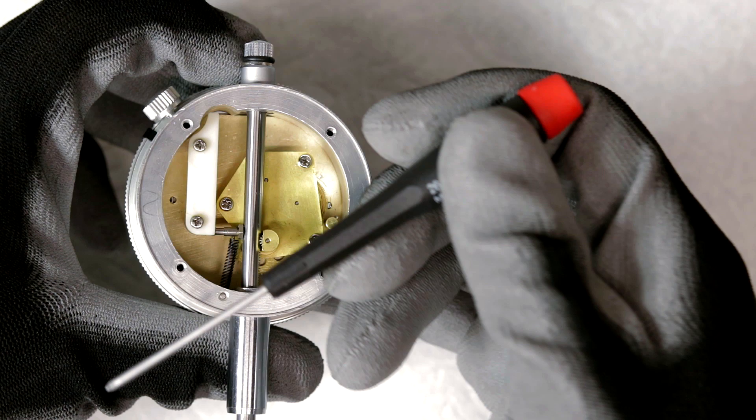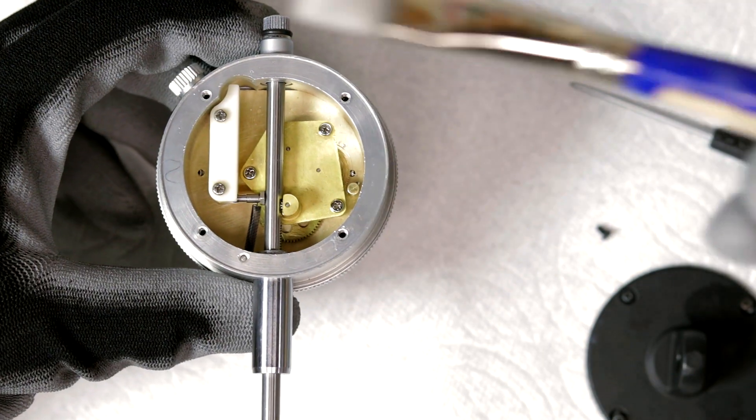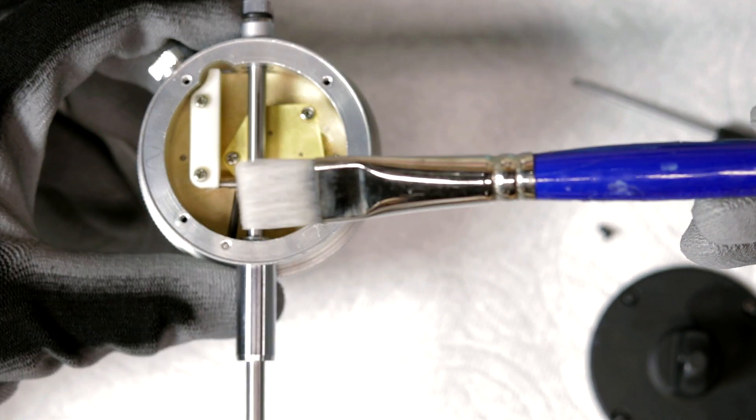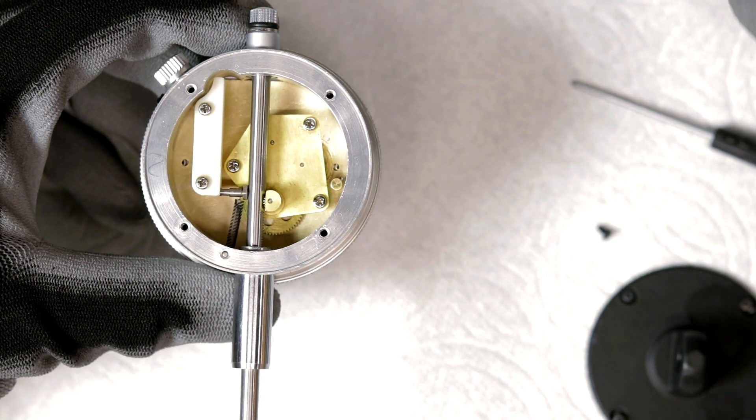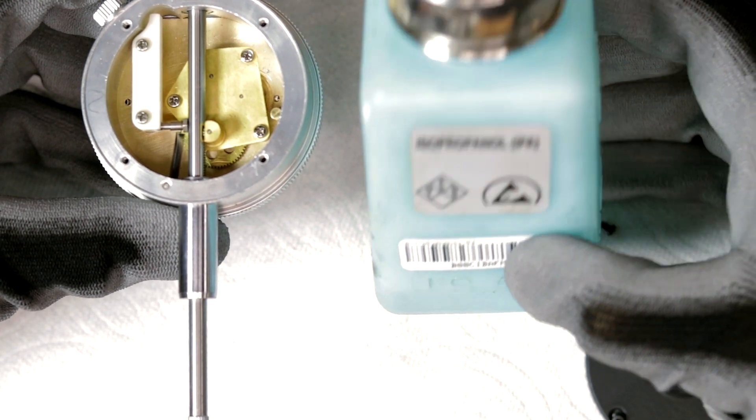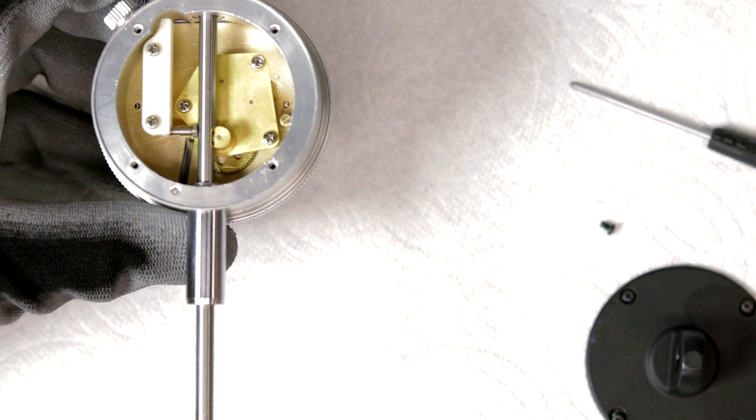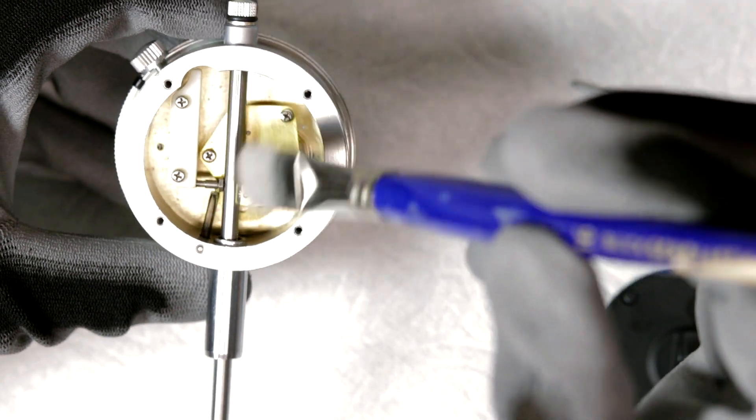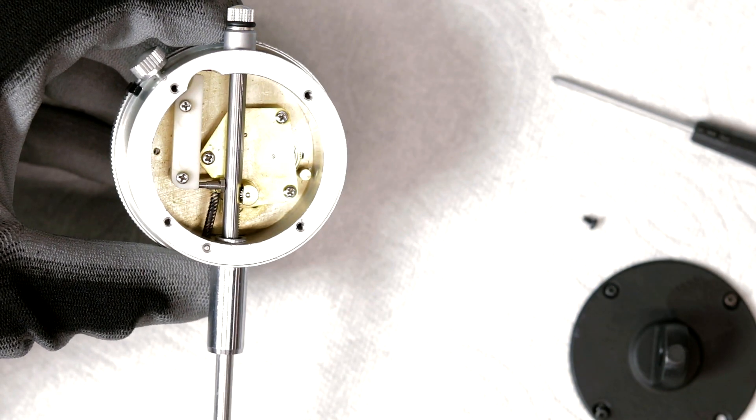And so what I ended up doing was I got a paintbrush with some kind of short but firm bristles, and then I just used denatured alcohol for this one. And I just have one of the little pumps like this, and what I ended up doing was I just started cleaning all the gears and everything like that, just wiping around in there.